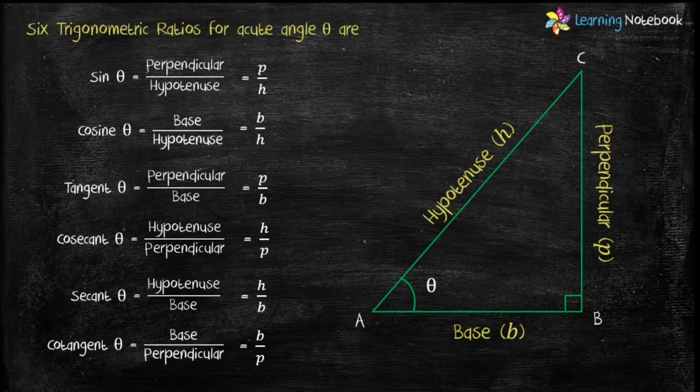There are three sides of a triangle, so by combination only six trigonometric ratios are possible. The mathematicians named these ratios as sin theta, cos theta, tan theta, cosec theta, sec theta and cot theta.